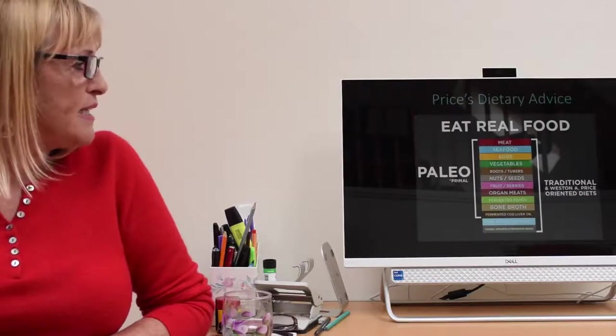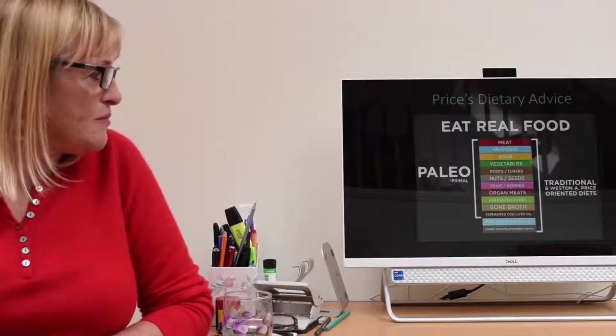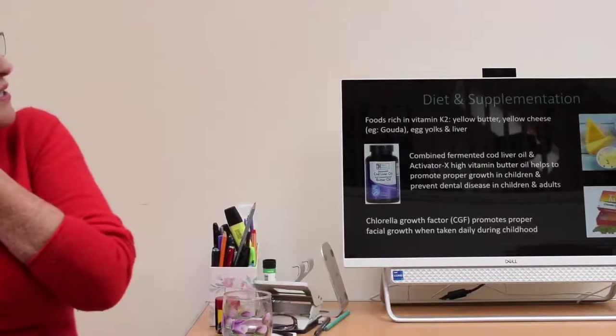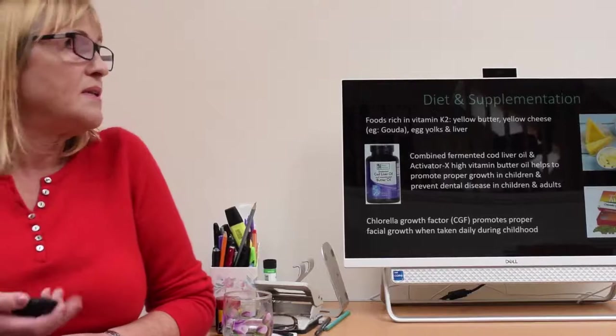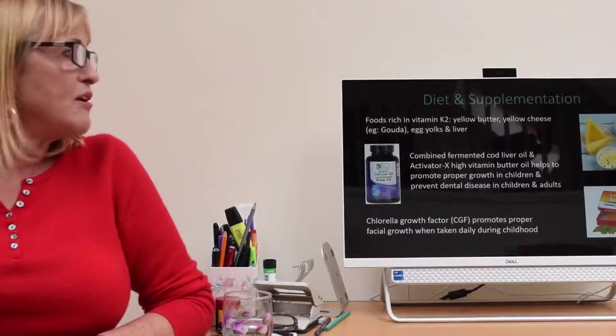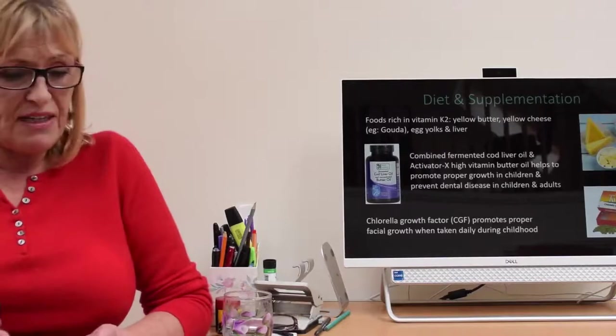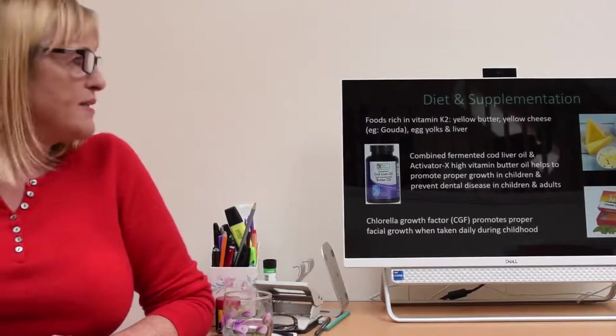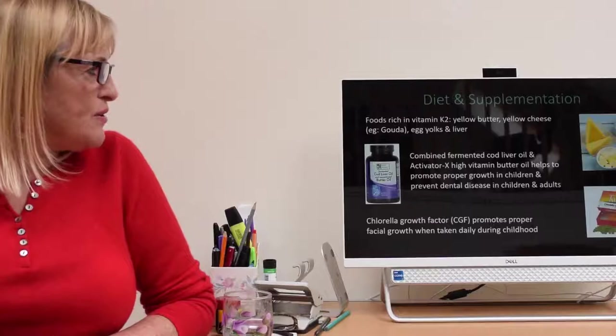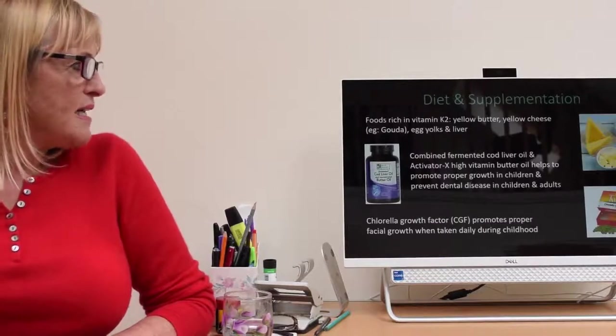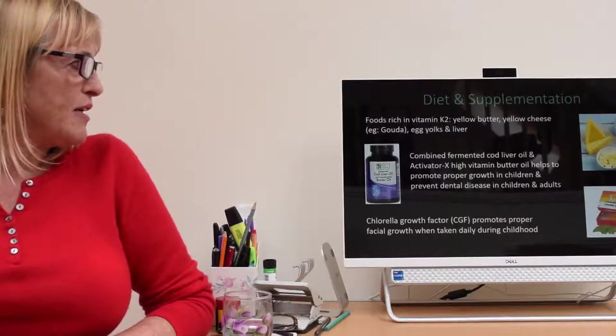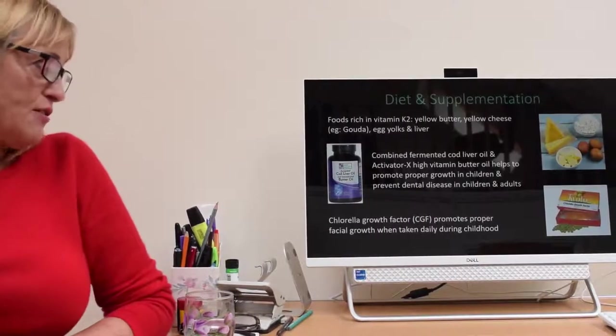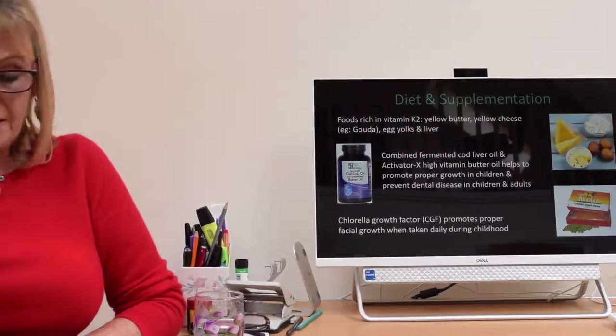His advice was to eat real food. You can look this up online. He was very keen on organ meats and bone broth. You can get vitamin K2 in yellow butter like Kerrygold, yellow cheese like gouda. If you have a little square of gouda each day, that will serve your needs. Egg yolks and liver, natto and other things. You can get it in supplement form. Cod liver oil and activator X, high vitamin butter oil helps promote proper facial growth and prevent tooth decay and gum disease. Chlorella growth factor helps promote proper facial growth when taken daily during childhood.